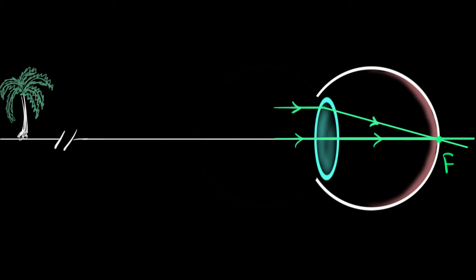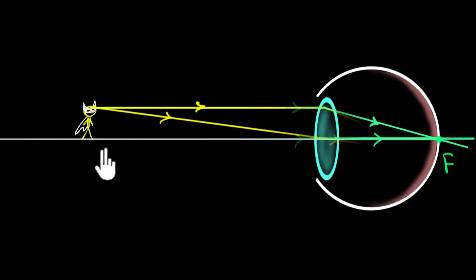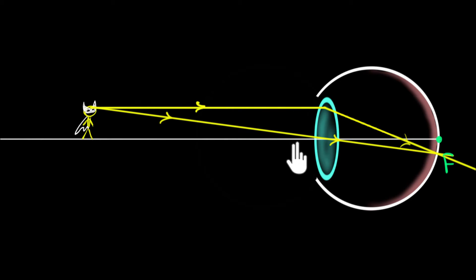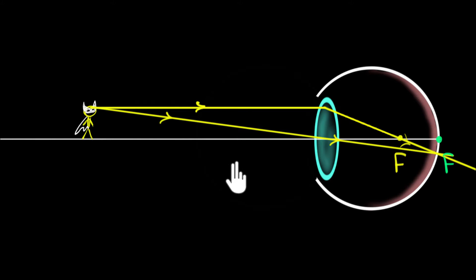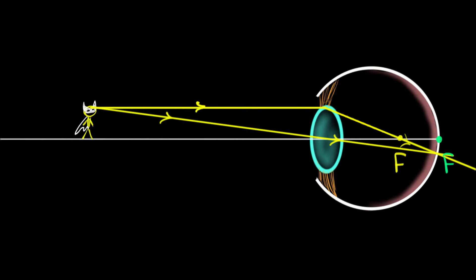But as the object comes closer — say looking at Batman who's standing pretty close to you — to see him clearly, the rays of light must again get focused onto the retina. The new principal focus has come closer, which means the focal length has become shorter. So as the object comes closer, the focal length gets shorter. This happens due to the ciliary muscles, which can push the lens and make it more curved, increasing its converging power — though we'll ignore that to keep things simple.